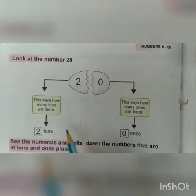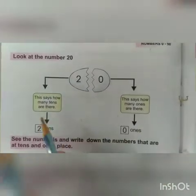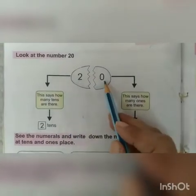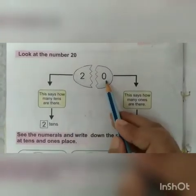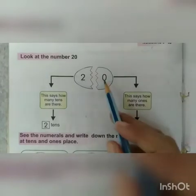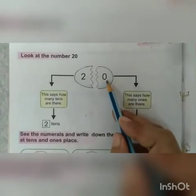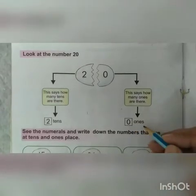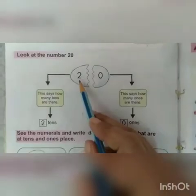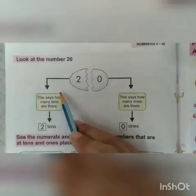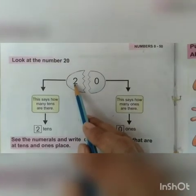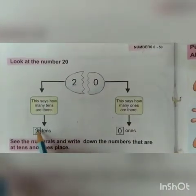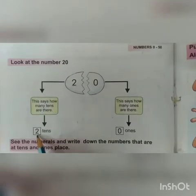Now, how many 1s are there? 0. We will write 0 here — it is already done for you. And the left side is 10s. How many 10s are there? 2. Yes, we will write 2 here. Okay?